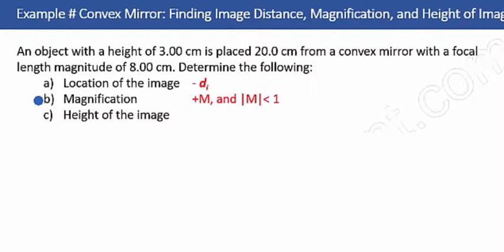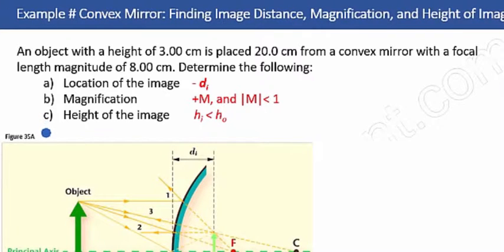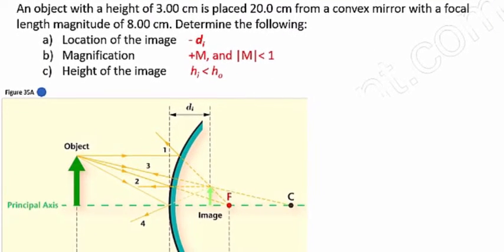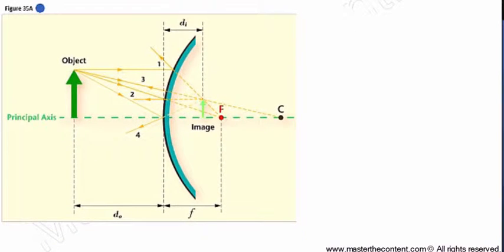Now, if the image is reduced, then the height of the image will be less than that of the height of the object. Let's take a closer look at our scenario, and for that we'll use figure 35A. Here we have a sketch of the scenario taking place, but note that this sketch is not to scale. We're first being asked to find the image distance. We're given the distance of the object from the vertex, which is 20 cm, and the focal length, which is 8 cm.